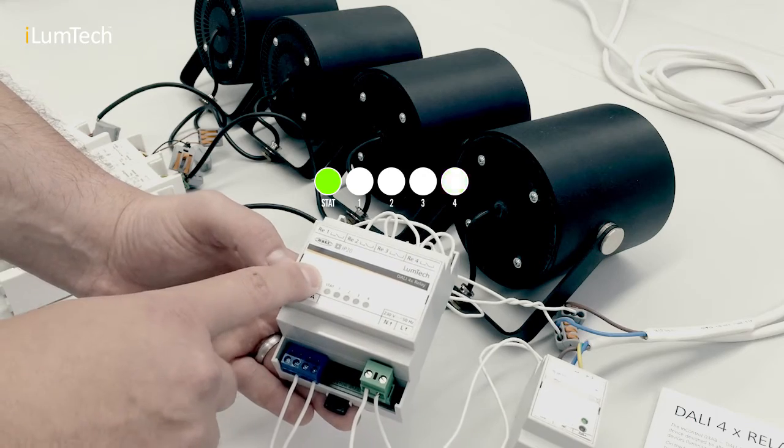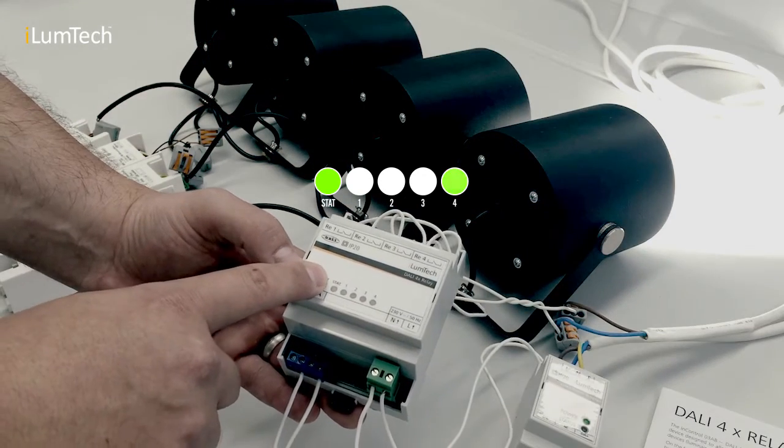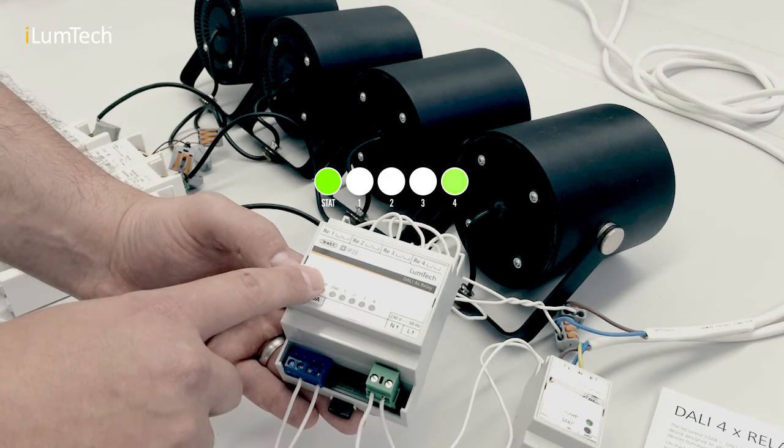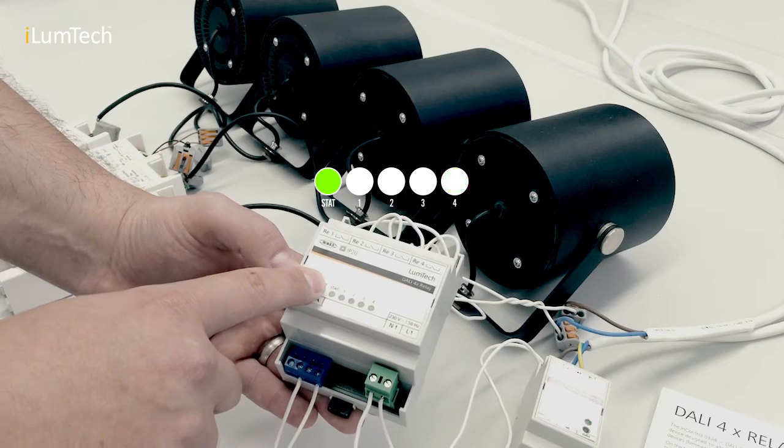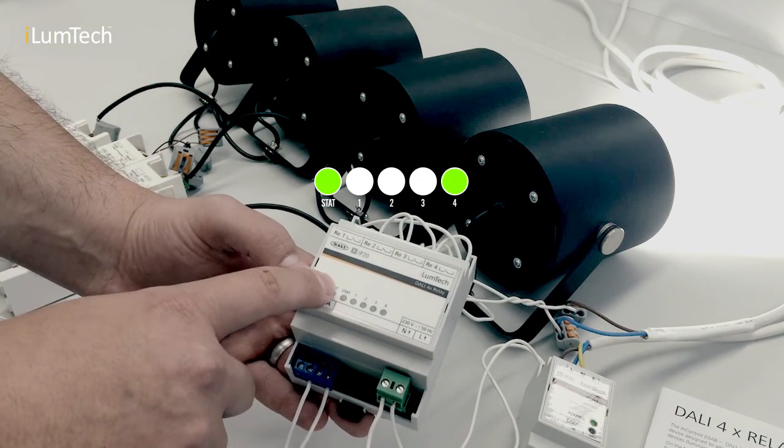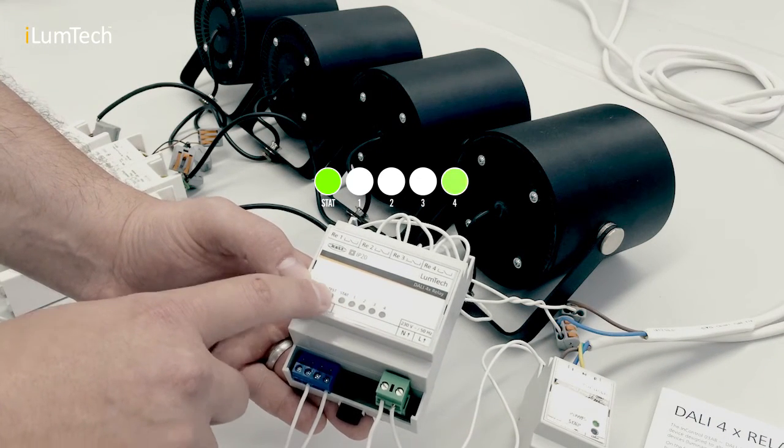Pressing and holding the push button for the selected relay contact changes its state. The current state of the selected relay contact is indicated by different ways of flashing. When the contact is closed, the LED indicator flashes with a predominantly ON state, while an open contact is represented by the LED indicator flashing with a predominantly OFF state.